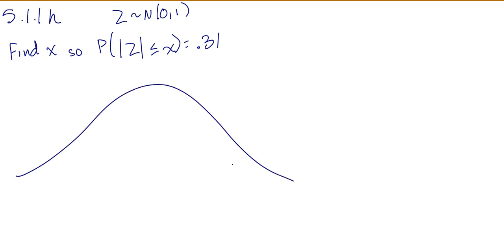This is the kind of problem where we know the probability and we're looking for Z. The problem that throws us off here is that we're talking about an absolute value. So when it's the absolute value that's less than or equal to, that means we're talking about things here in the middle. Absolute value less than or equal to means in the middle.